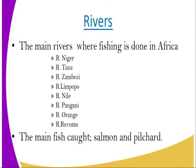The main rivers where fishing is done in Africa are River Niger, River Tana, River Zambezi, River Limpopo, River Nile, River Pangani, River Orisha, and River Ruvuma. Not all rivers provide fisheries. The main fish caught include salmon and perch.